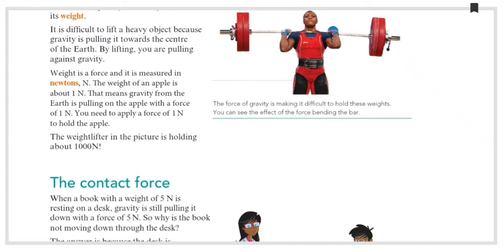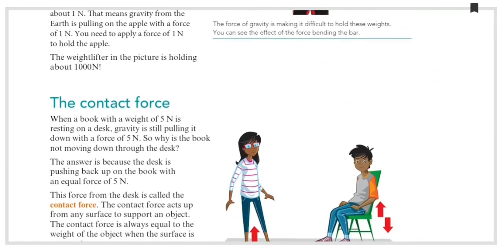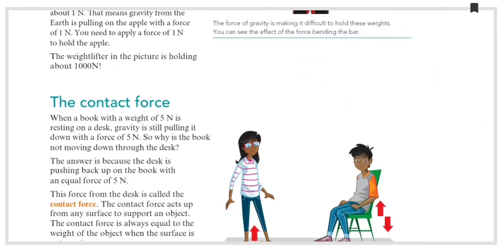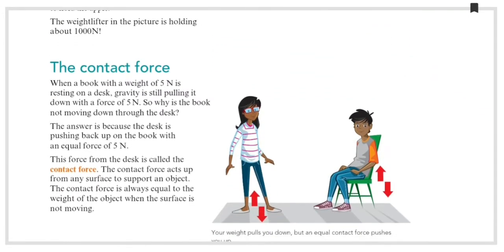The weightlifter is exerting a force of 1000 Newtons, with gravity exerting a force of 1000 Newtons. Next, we are going to learn about contact force. When a book having a weight of 5 Newtons is resting on a desk, gravity is still pushing it down with a force of 5 Newtons.